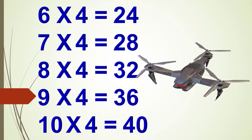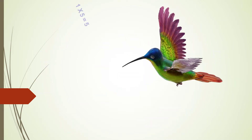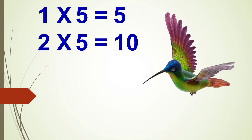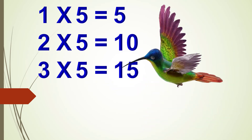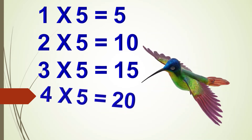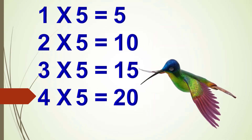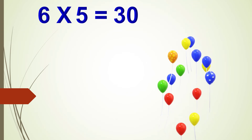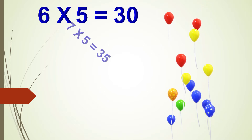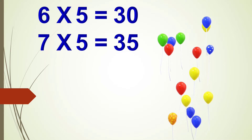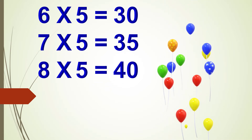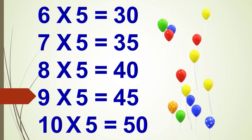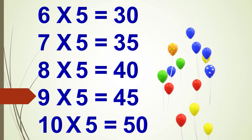One times five is five, two times five are ten, three times five are fifteen, four times five are twenty, five times five are twenty-five, six times five are thirty, seven times five are thirty-five, eight times five are forty, nine times five are forty-five, ten times five are fifty.